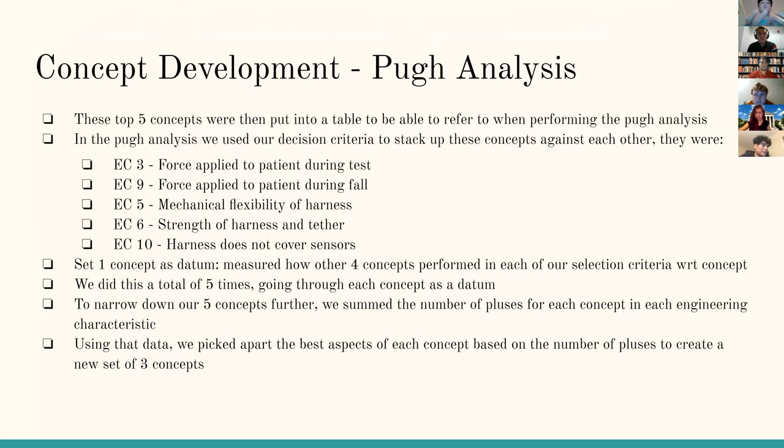So to do that, we used the Pugh analysis. We took each of our top five concepts and matched them up against other concepts. We'd use one as a datum and match that one up with another specific concept, and we'd see if it's better, worse, or the same. We did that five different times, so we matched every single concept up and got data on every single concept.